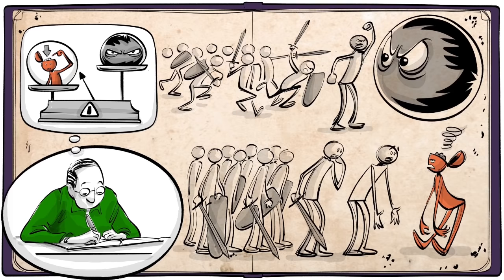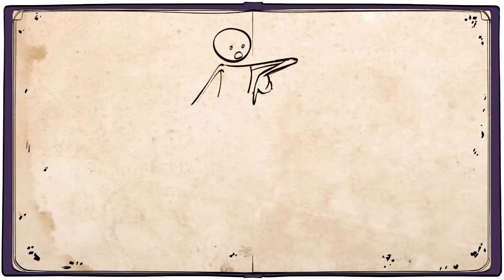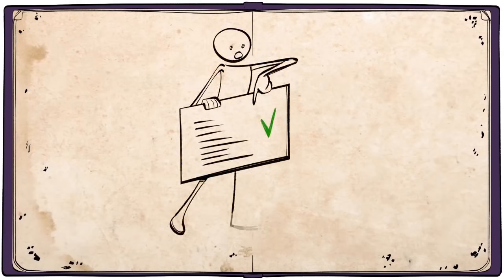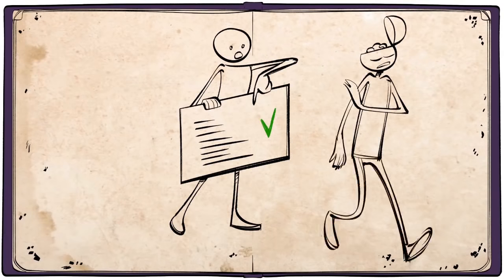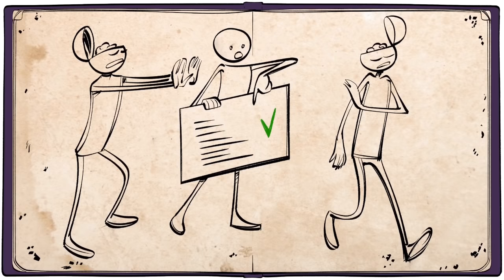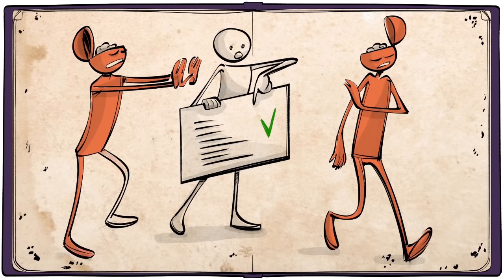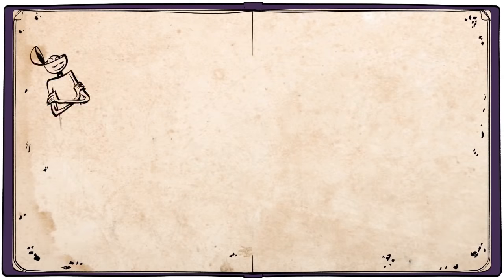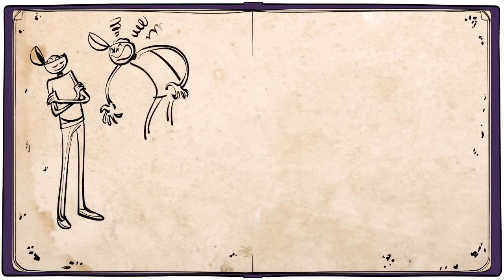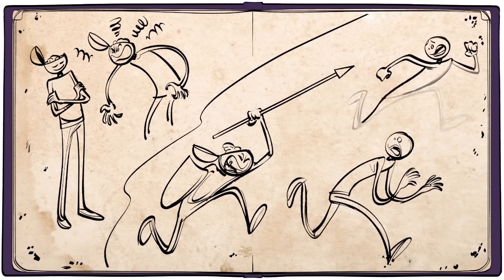Reasons fall on deaf ears. Facts that contradict a stupid person's prejudgment simply need not be believed, and when they are irrefutable, they are just pushed aside as inconsequential, as incidental. In all this, the stupid person is self-satisfied and, being easily irritated, becomes dangerous by going on the attack.